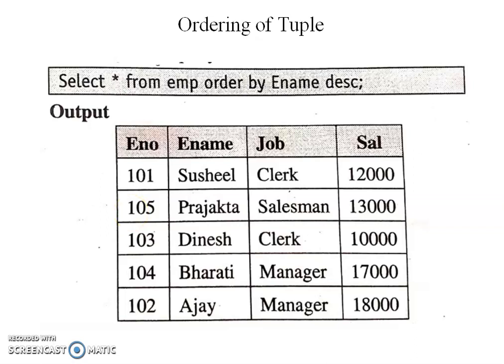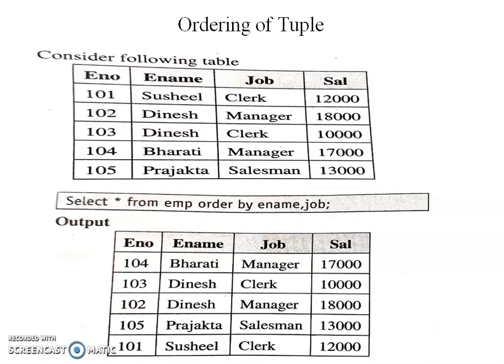Sometimes some records may have the same value in the field given for the sorting criteria. In such a case we can give more than one column name for sorting purpose. If data in the first column is the same, the data of the second column is taken into consideration for sorting. For example, if two employees have the same name Dinesh, we write: SELECT * FROM employee ORDER BY ename, job. The output displays employee number, employee name, job, and salary sorted accordingly.